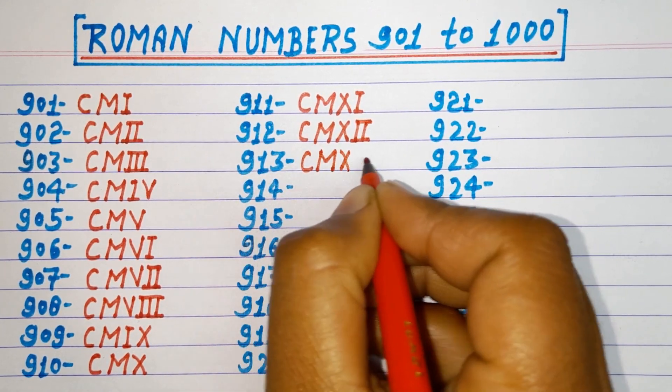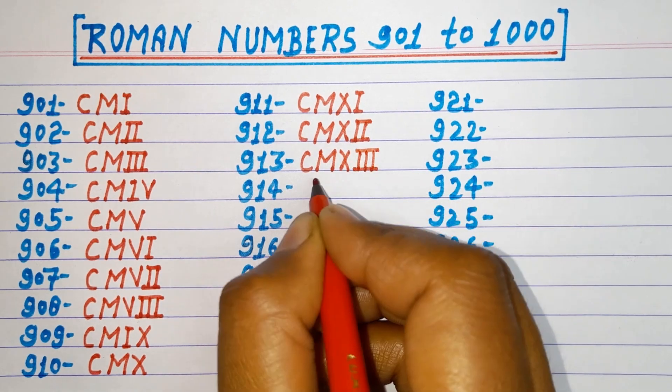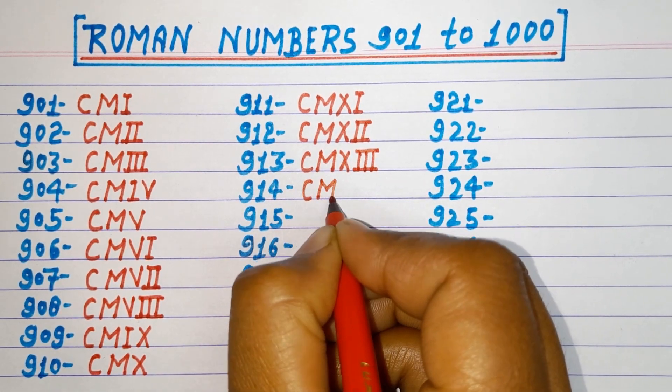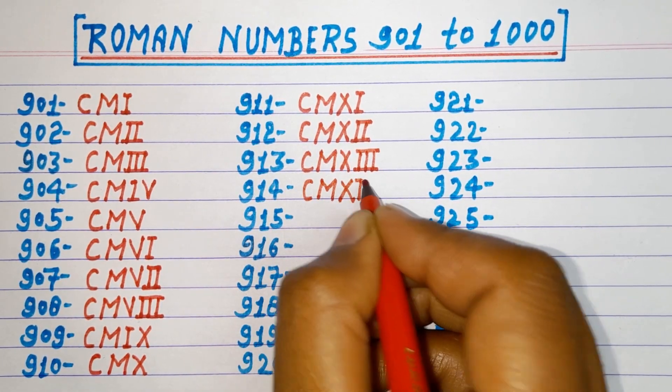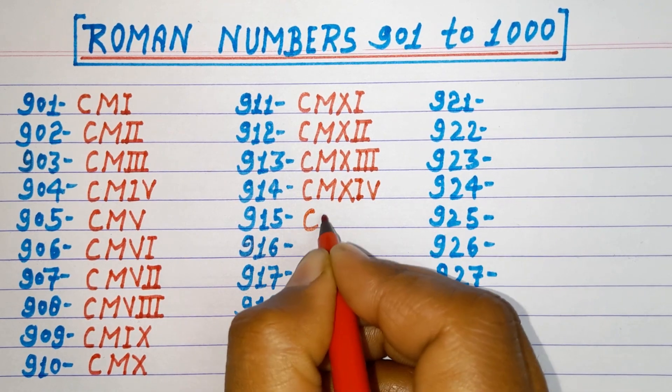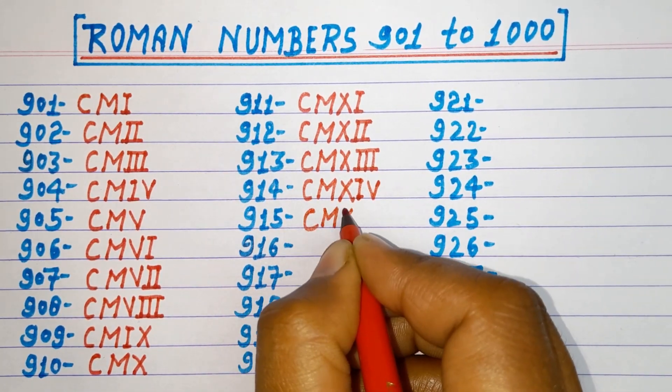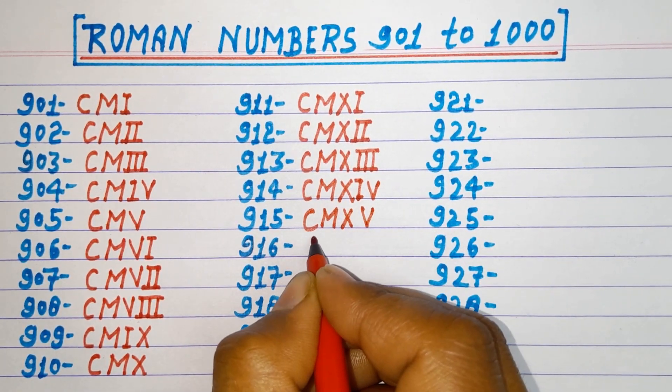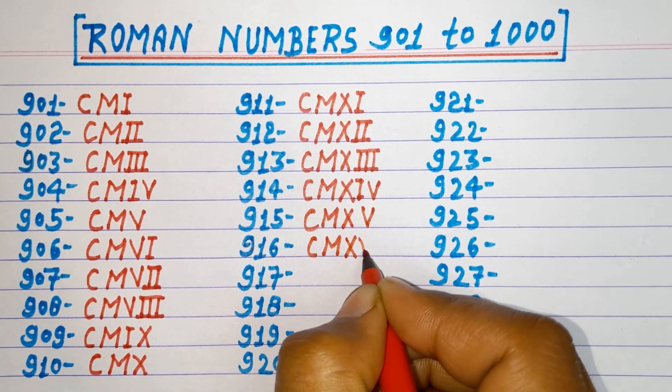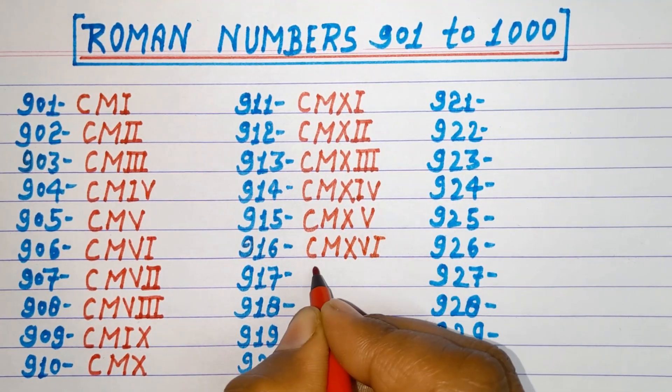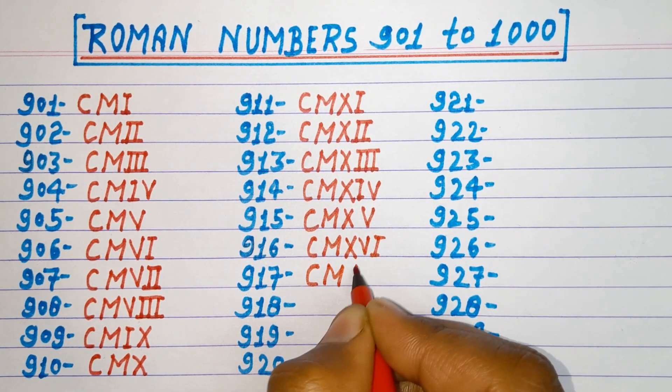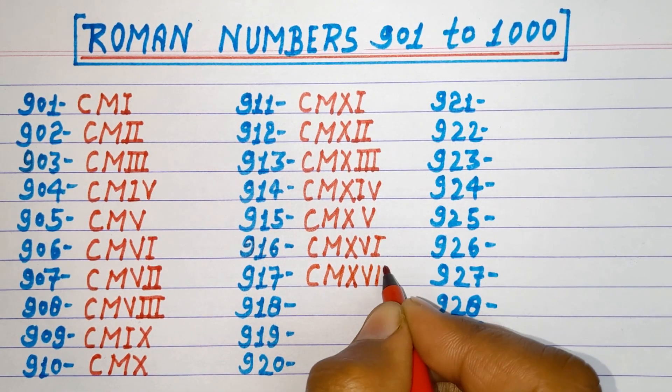913 CMXIII, 914 CMXIV, 915 CMXV, 916 CMXVI, 917 CMXVII.